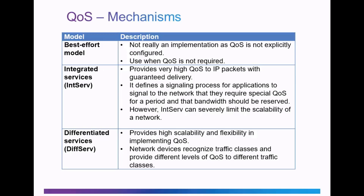It uses a signaling process known as RSVP, or Resource Reservation Protocol. The INTSERV model can severely limit the scalability of a network, and it is demanding on resources, and therefore doesn't scale well for large or enterprise networks. The differentiated services model, or DIFFSERV model, is a highly scalable and flexible implementation of QoS. It works off of manually configured traffic classes, which need to be configured on routers throughout the network.